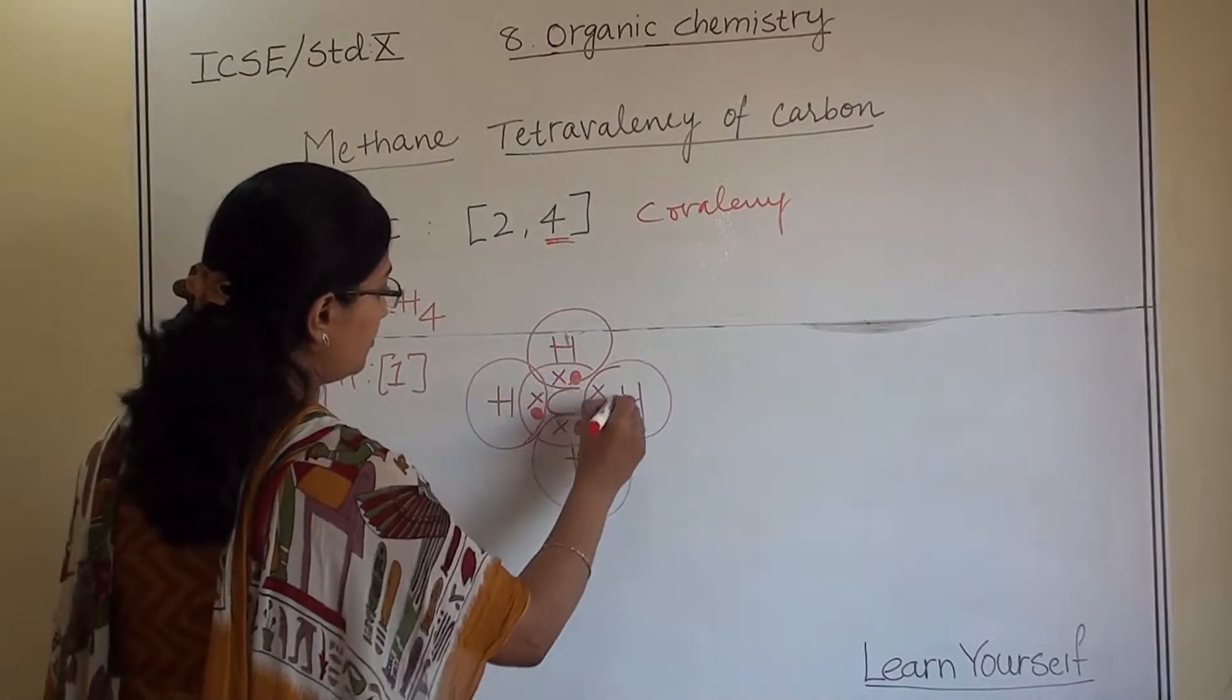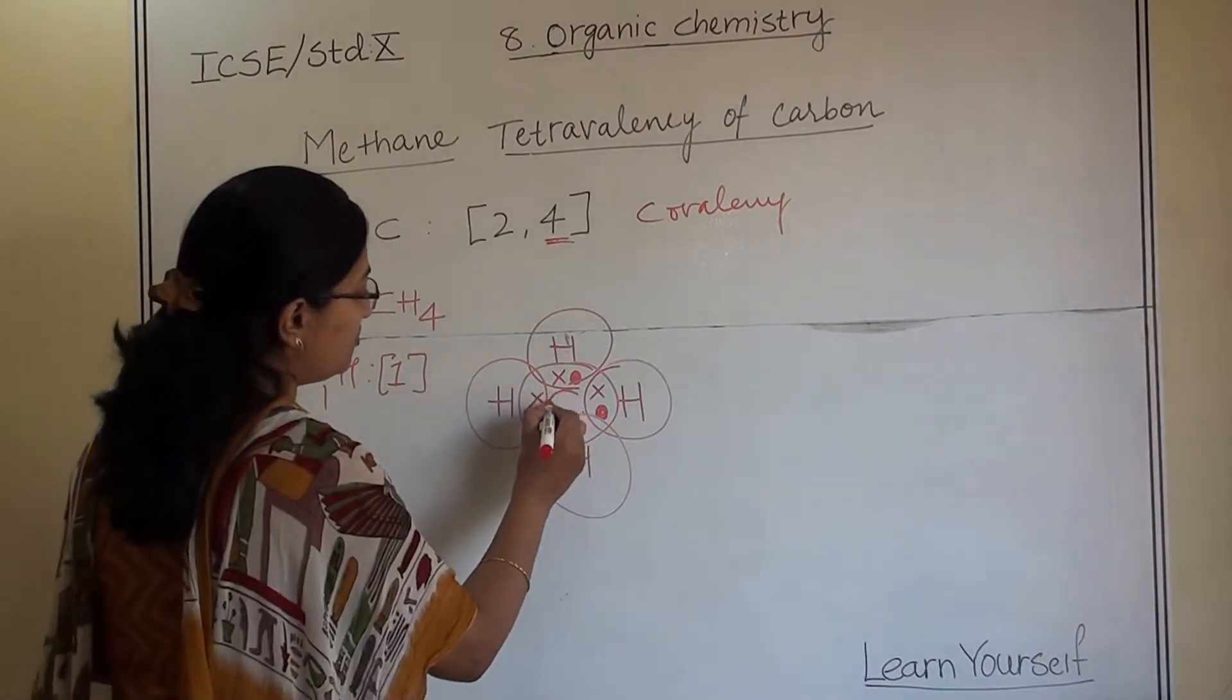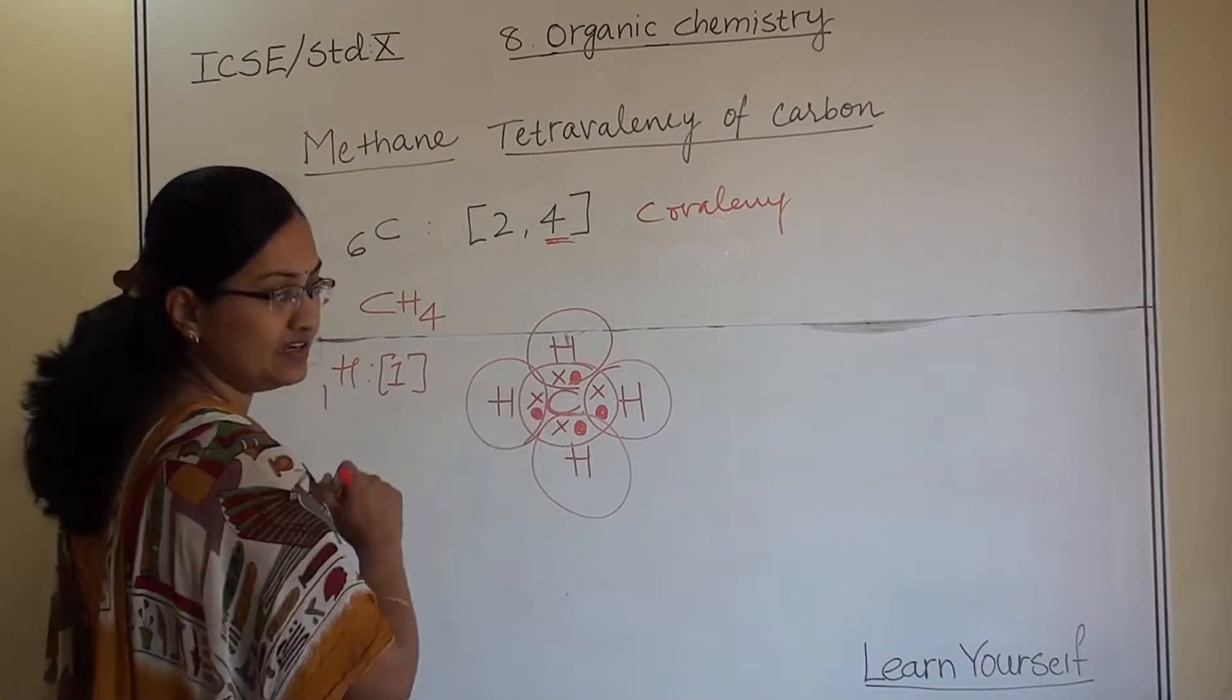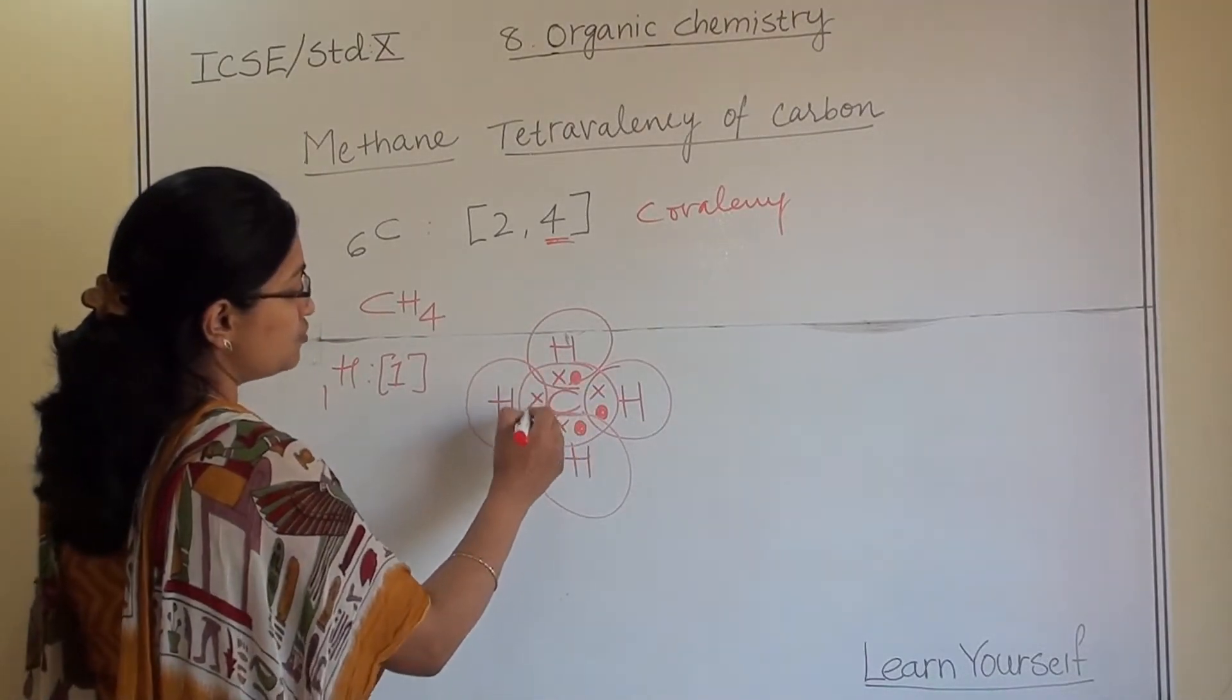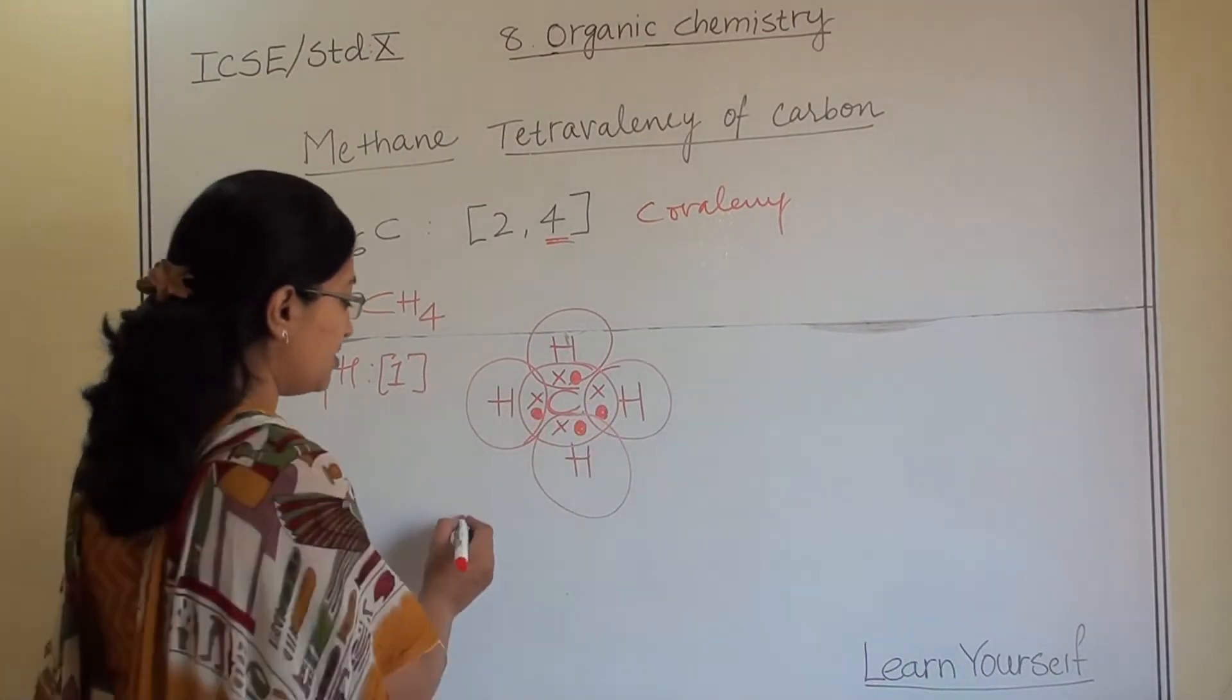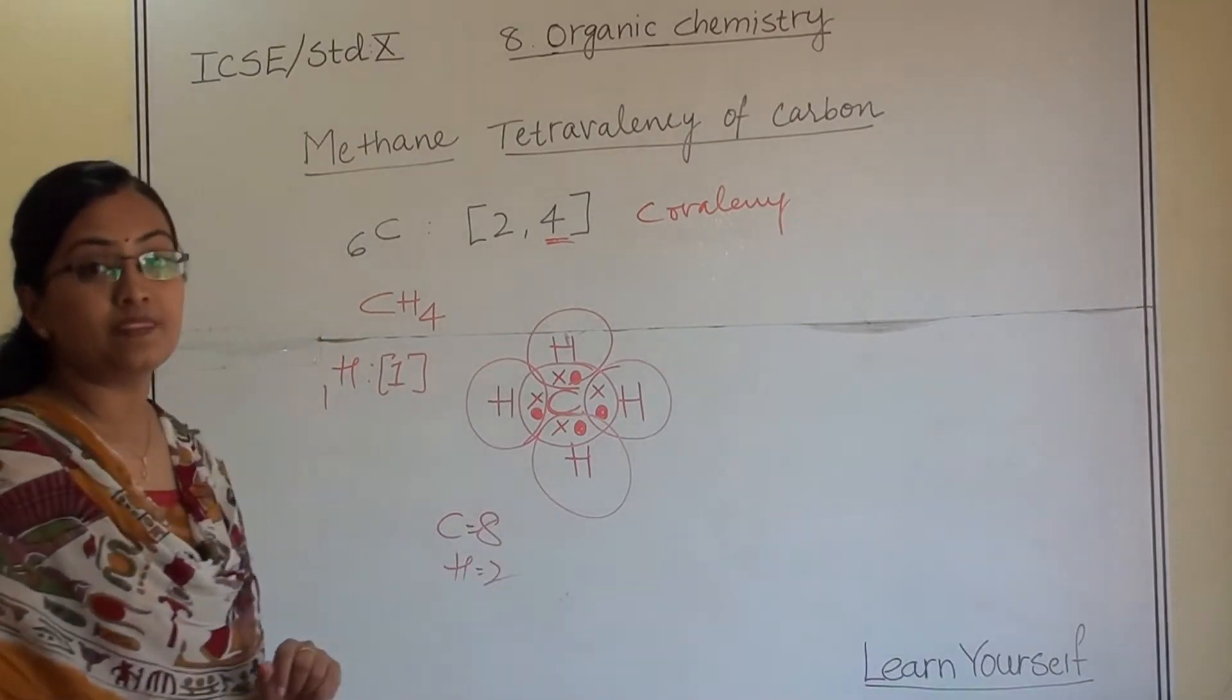And this is for carbon. If you will see, carbon has how many electrons? 1, 2, 3, 4, 5, 6, 7 and 8. And each hydrogen has how many electrons? 2 for each. So in turn, carbon will complete its octet and hydrogen will complete its duplet. So this is a sharing.